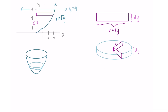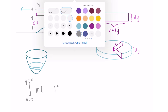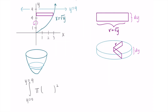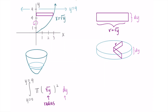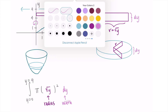We now have all the information we need to put into the formula. My integral has bounds from y = 0 up to y = 9. Then I do π times the radius squared — my radius is √y — so it's π(√y)², times dy for the width.